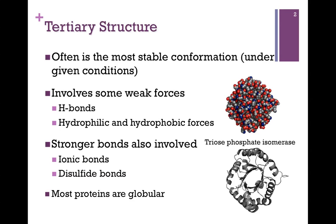Remember, most proteins are globular in their overall structure. Here we have triose phosphate isomerase. We have the space-filling model on the top of our figure, and that gives us a pretty good idea of the size, but it's hard to distinguish the secondary structure. For that, we need the ribbon diagram on the bottom. You can see the alpha helices on the outer portion of the protein and the beta strands on the inside. All of these structures, whether space-filling models or ribbon diagrams, came from crystal structures.